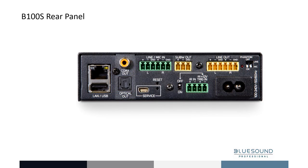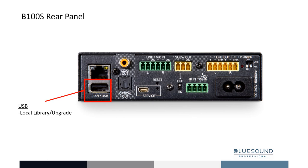Now let's explore the rear panel of the B100S to understand the inputs and outputs of this player. The B100S communicates with a network via its RJ45 connection using CAT5E or CAT6 Ethernet cable. It does not communicate via Wi-Fi, Bluetooth, or AirPlay 2. The USB connector can be used to connect to a local library such as a USB stick, though long-term use is not recommended due to limited life of a USB stick. This port can also be used for a manual upgrade of the firmware should internet via the network not be available.